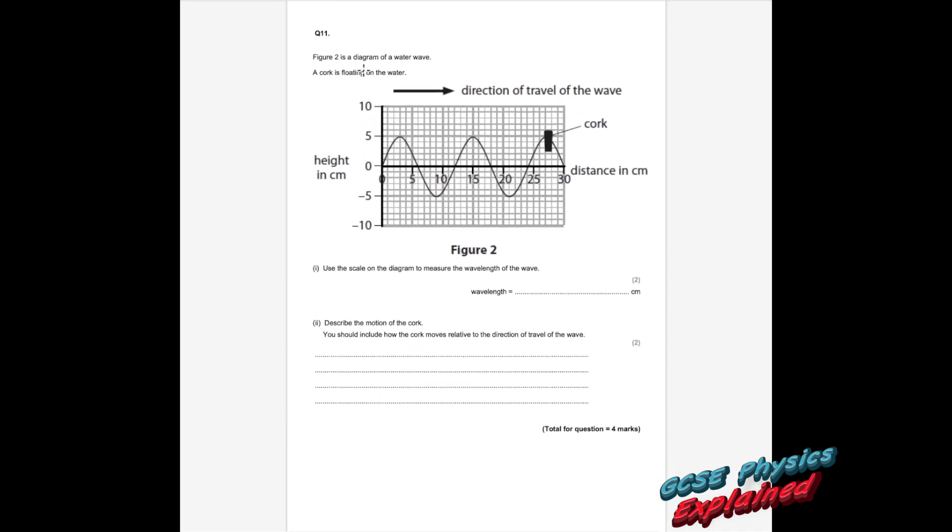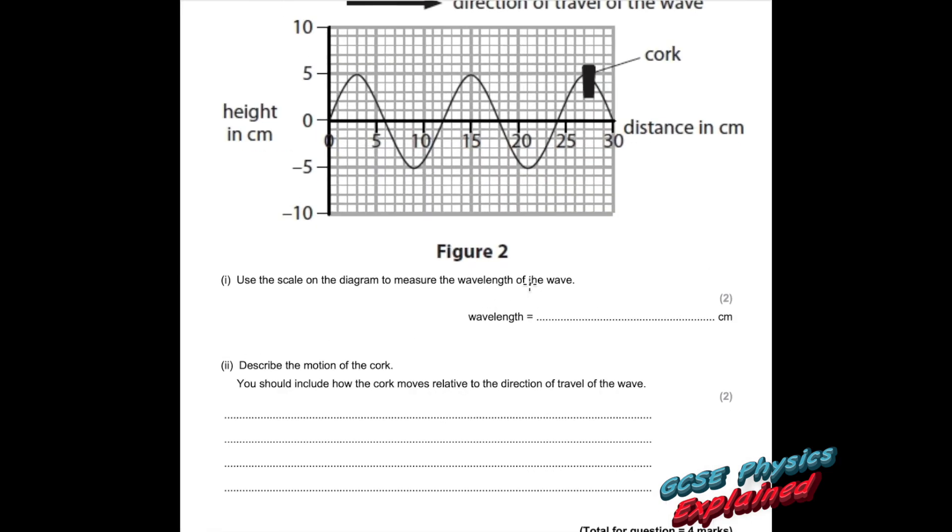The last question, question 11. Figure 2 is a diagram of a water wave. A cork is floating on the water. The direction of travel of the wave is going from left to right. That cork will be bobbing up and down if it's floating on water. Part 1: use the scale on the diagram to measure the wavelength of the wave. The wavelength of a wave is just from any position to the same position on the next wave. So we'll start from there, go all the way up, all the way down, and all the way back to there. That is the wavelength from there to there, and that is 12. Make sure that the scale's not going to catch you out. Each square is just 1. So that's 10, 11, 12. Easy.